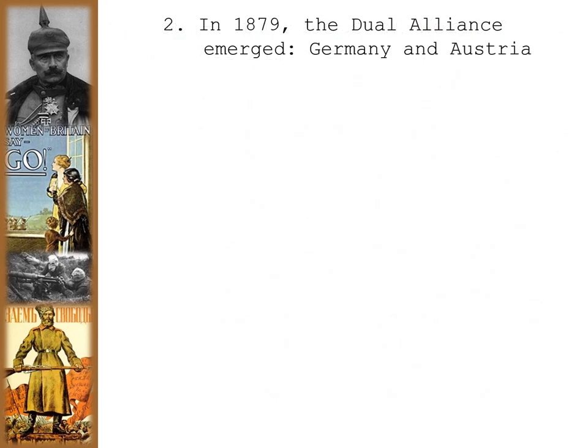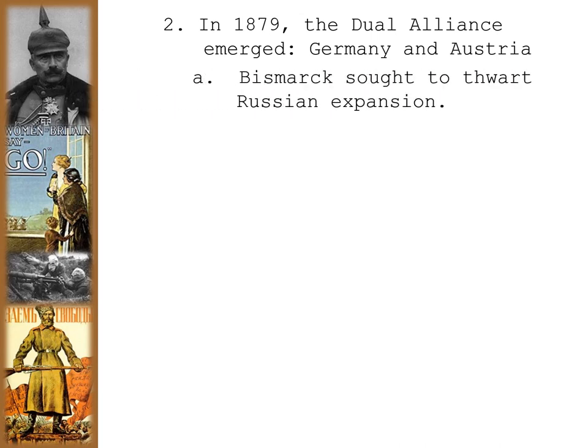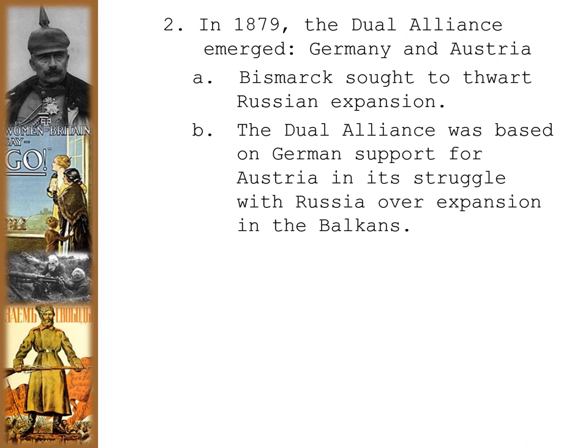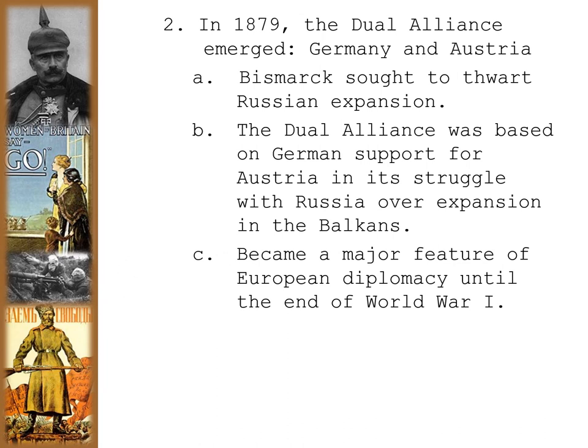In 1879, the dual alliance emerged between Germany and Austria. Bismarck convinced Austria that they should no longer be enemies — even though he had attacked Austria in the Austro-Prussian War — that they would be better together than apart. Bismarck sought to thwart Russian expansion, especially in the Balkans region. The dual alliance was based on German support for Austria in its struggle with Russia over expansion in the Balkans, and this became a major feature of European diplomacy until the end of World War I.